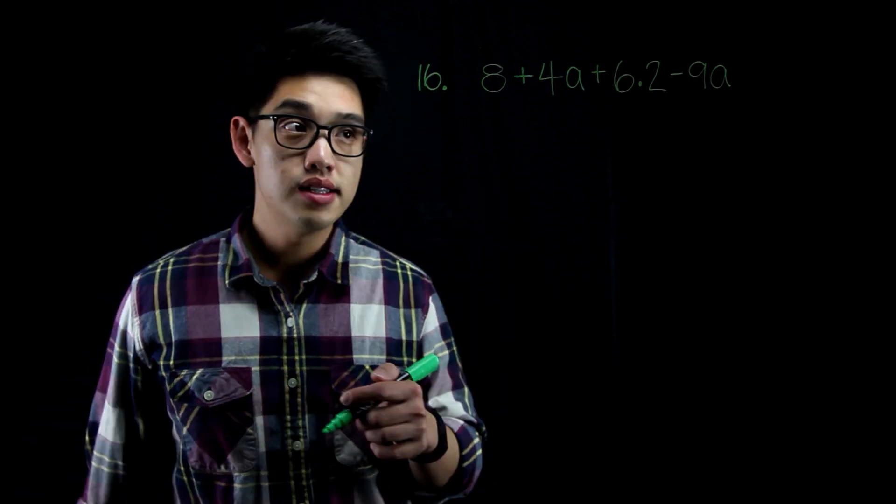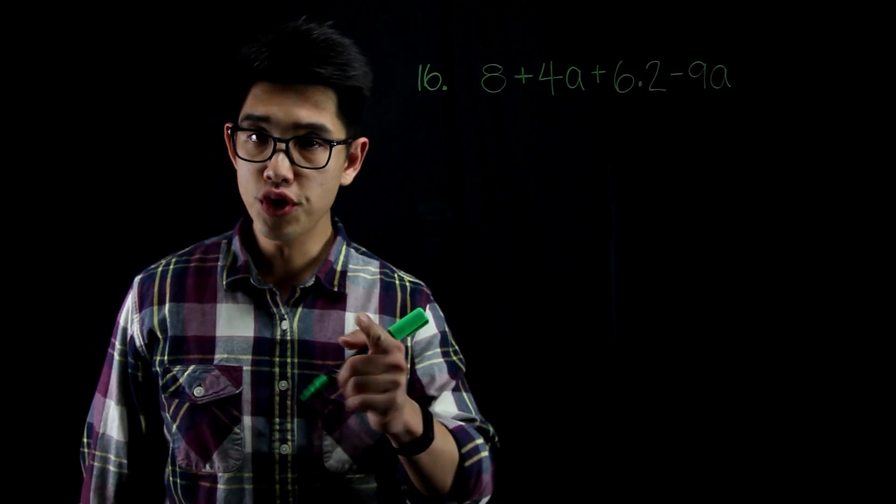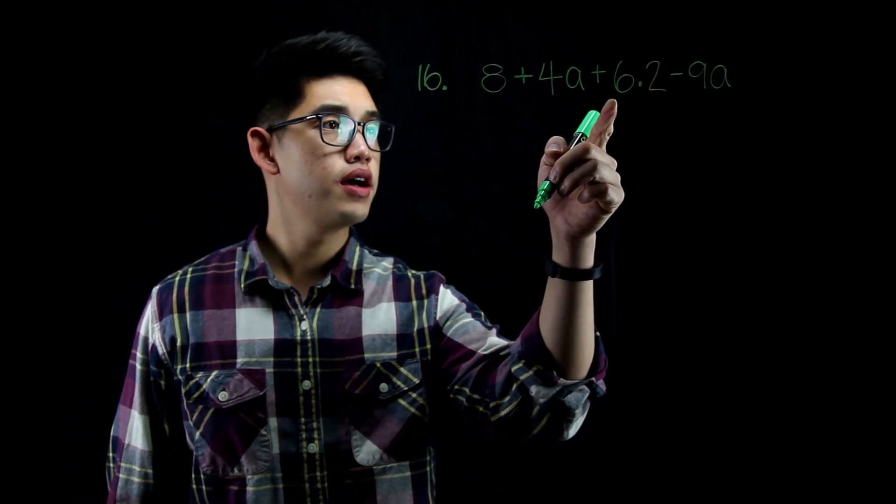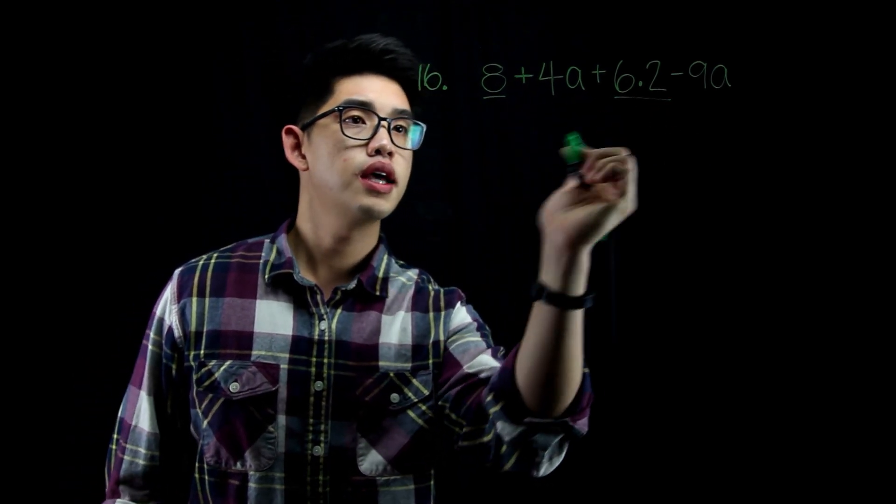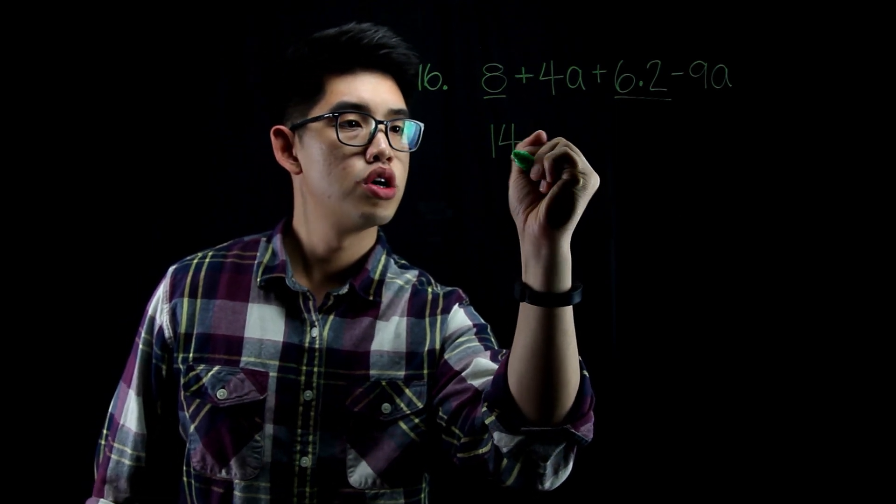Alright, for number 16, I have 8 plus 4a plus 6.2 minus 9a. The first thing you want to do is combine like terms. I have 8 here and I have 6.2. So if I combine all the numbers together, I'm going to get 8 plus 6.2. That's going to be 14.2.